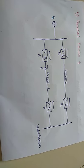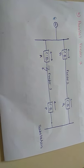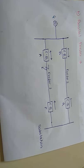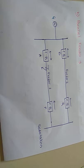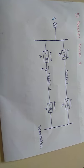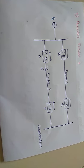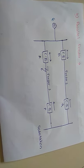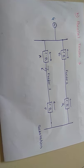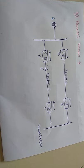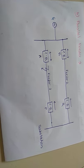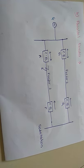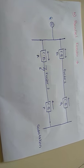The next point is parallel feeder. We have discussed in a radial feeder that continuity of supply cannot be maintained. In order to remove this drawback, we will discuss about the parallel feeder, where the continuity of supply can be maintained.